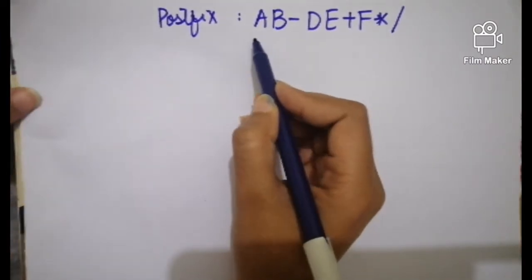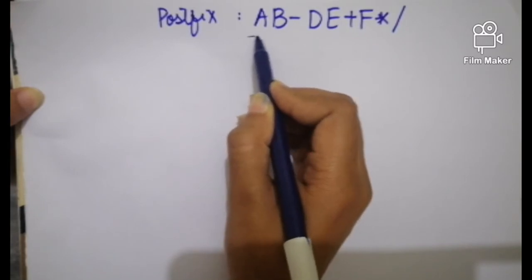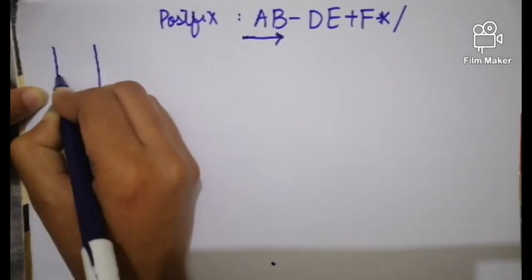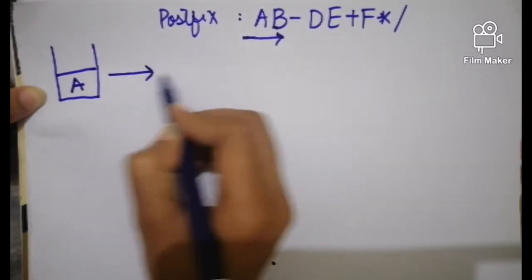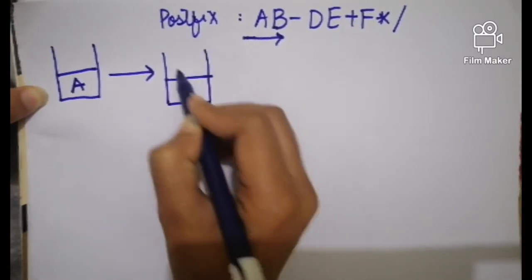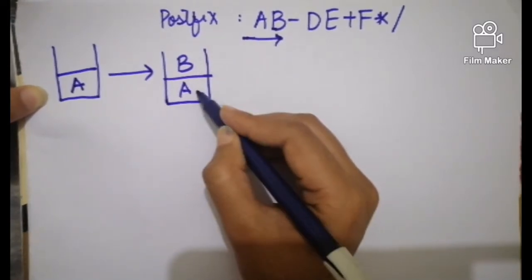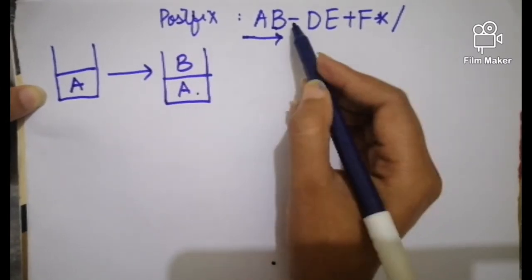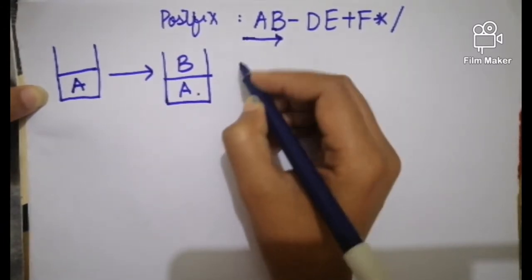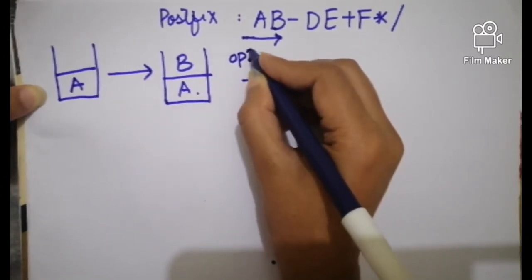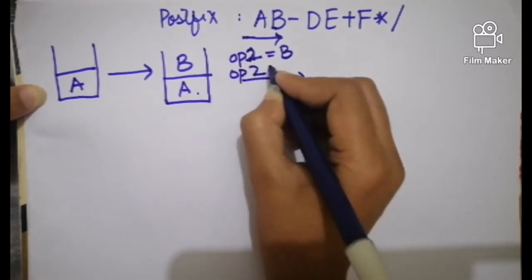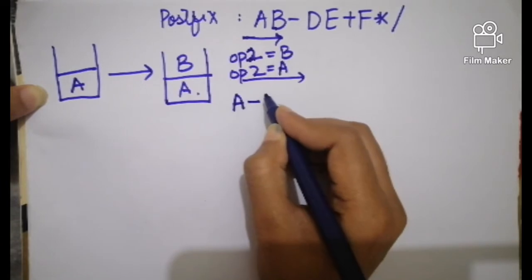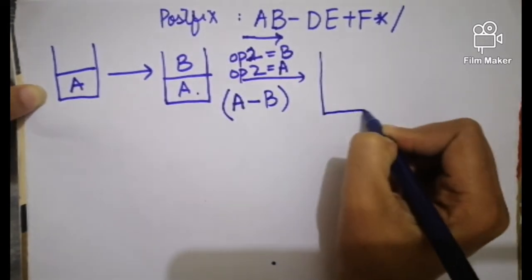Now let's see another example. We scan the expression from left to right. The first one is an operand so we push it into the stack. The next one is also an operand so we push it. Now there is an operator, so we pop these two operands and place the operator between them. Operand one is b and operand two is a, giving us (a + b). Place the brackets and push into the stack.